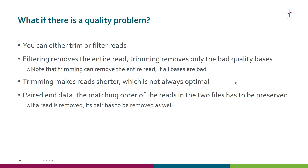If you detect a quality problem, you can basically either trim or filter the reads. Filtering removes the entire read, while trimming removes only the bad quality bases or adapters. Of course, trimming can also remove the entire read if all the bases are bad, so that's something to take into account.